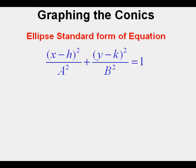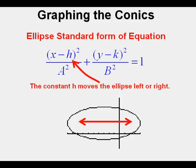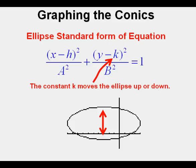As in a circle, the constant h moves the ellipse to the left and right of the y-axis. X minus some number moves it to the right, and x plus some number moves the ellipse to the left. The k constant moves the ellipse up and down. If it's y minus a positive number, the ellipse moves up. If it's y plus a positive number, the ellipse moves downward.